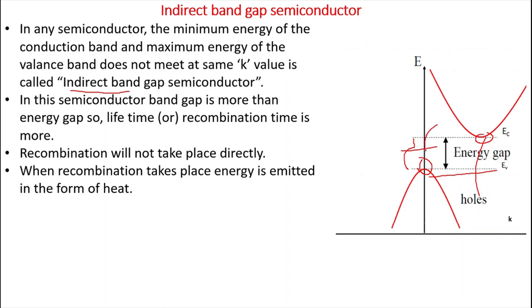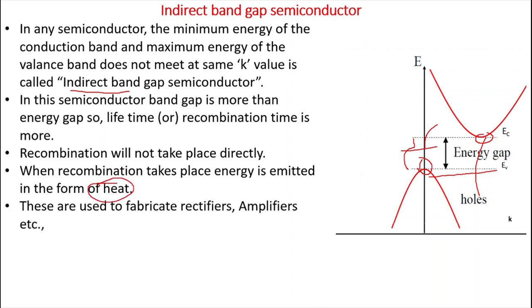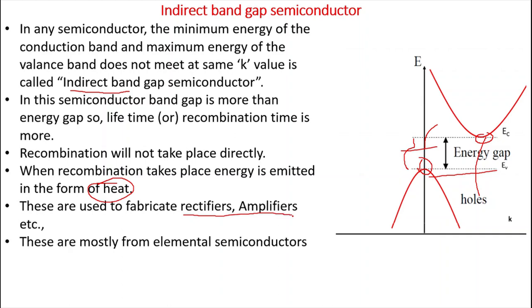When the electron combines with the hole and recombination takes place, energy gets emitted — but here the energy is emitted in the form of heat. Because of this, indirect bandgap semiconductors are generally used to fabricate rectifiers, amplifiers, etc., and these are mostly elemental semiconductors.